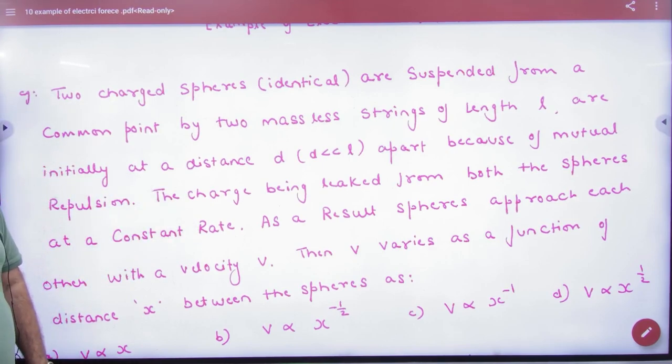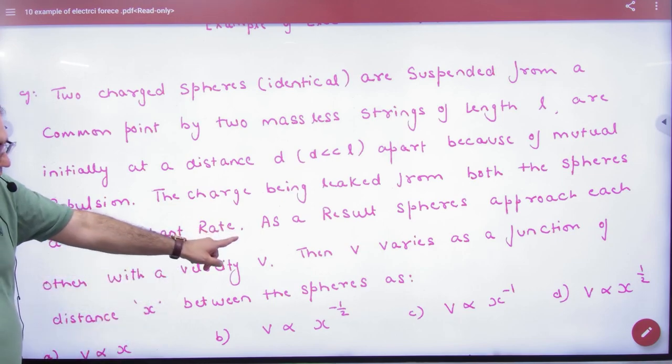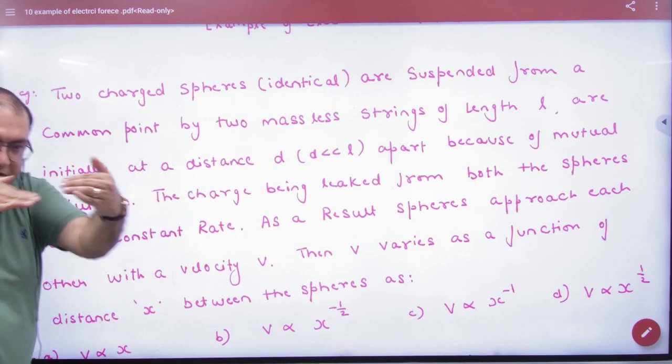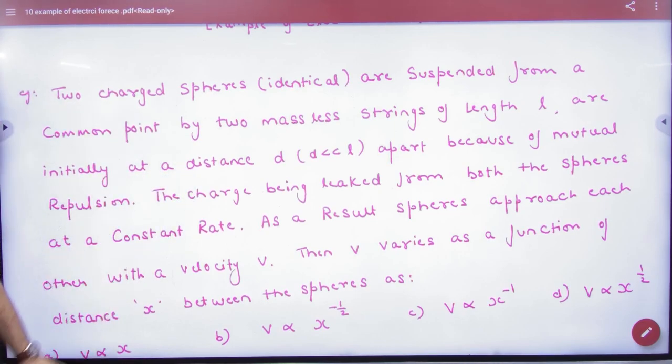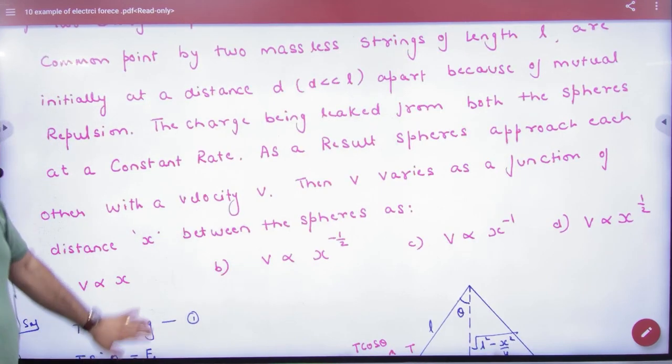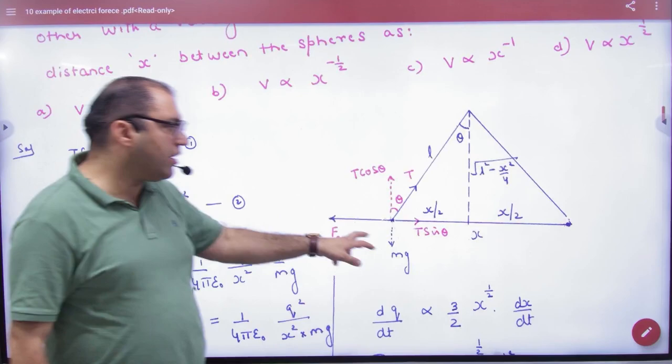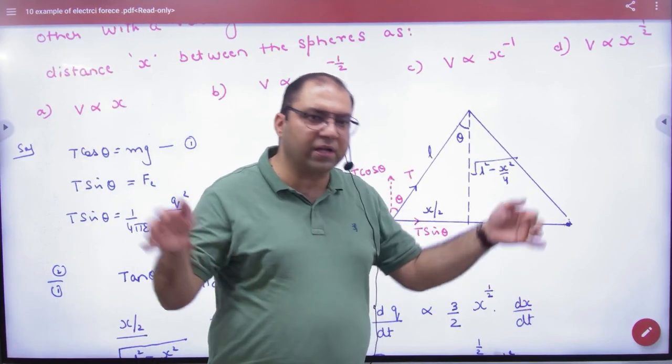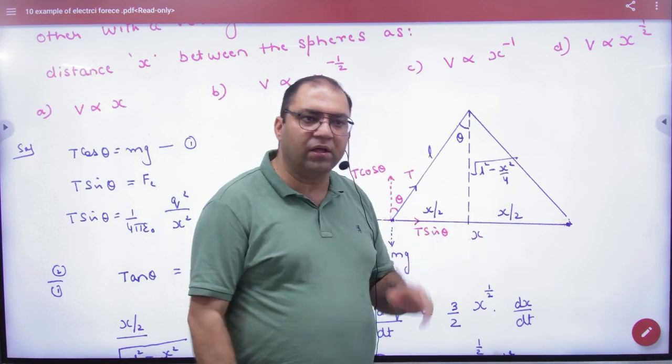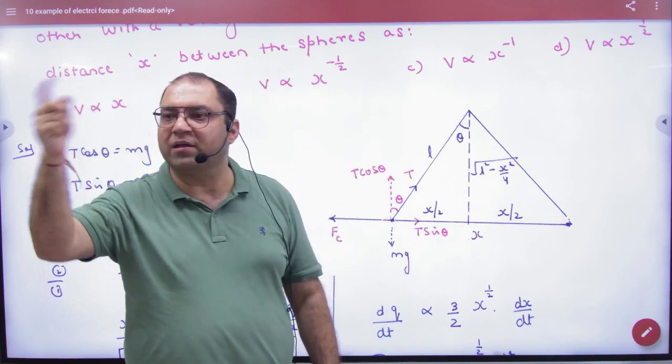Constant rate means DQ by DT is a constant. As a result, spheres approach each other with velocity V. You need to find the relationship between velocity and X, where X is the distance at any instant. V and X are related.